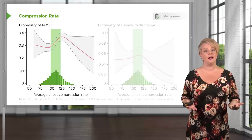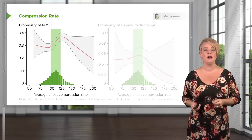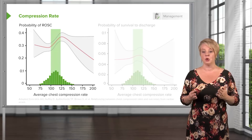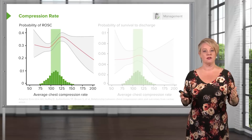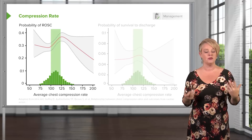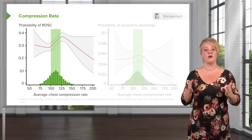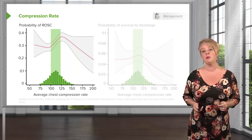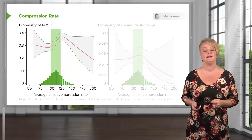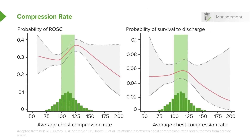Let's start with compression rate. There have been a number of studies looking at rate. In one study, they looked at the mean rate of chest compressions among a large sample of cardiac arrest patients and found that patients who had compressions at a rate of roughly 100 to 120 had the highest probability of ROSC — return of spontaneous circulation — and the highest probability of survival to hospital discharge. So 100 to 120 is the rate you want, and there's actual science showing patients are more likely to survive at that rate.